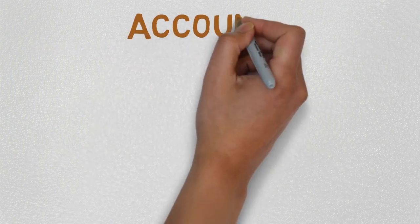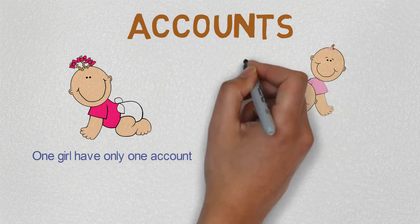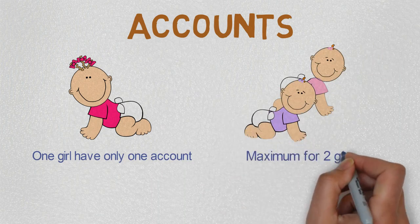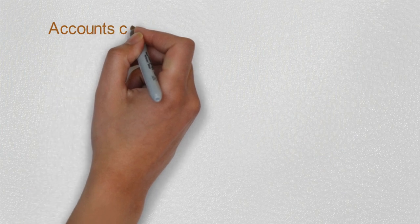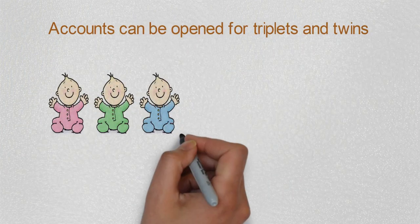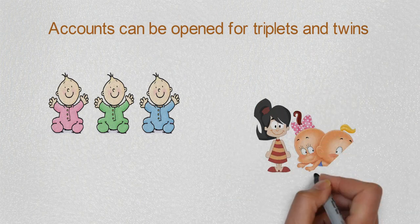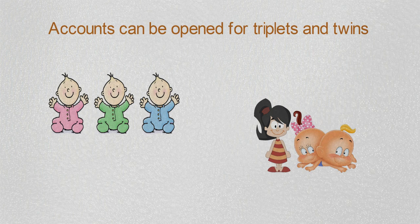Only one account can be opened on a girl's name and maximum two accounts can be opened by a couple. But if triplet girls are born, or you already have a daughter and twin daughters a second time are born, then three accounts can be opened in the name of each girl.